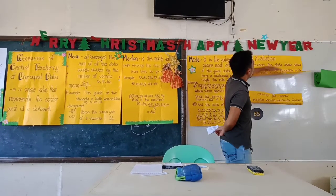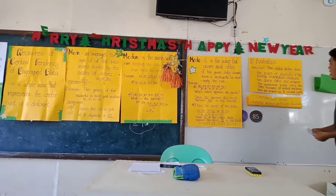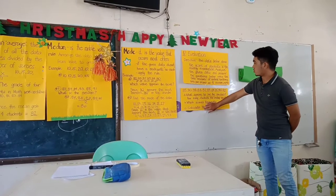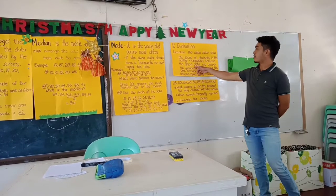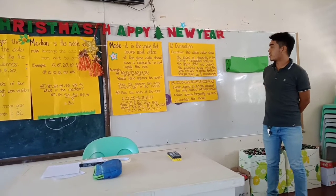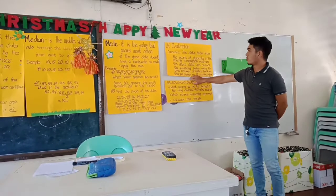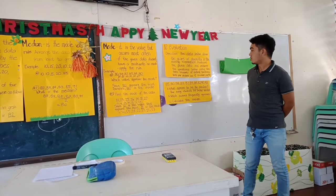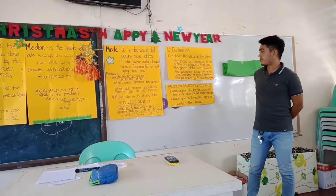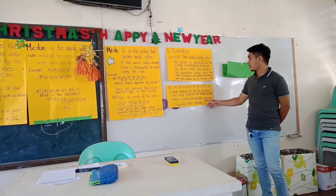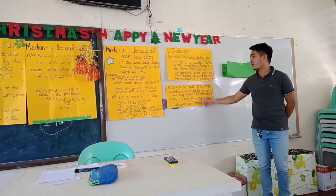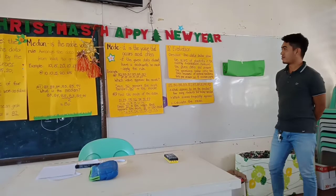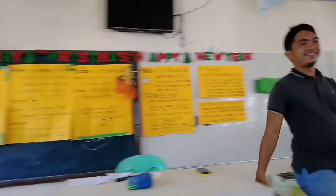Okay, so let's have an activity. Get one piece of paper folded twice. The direction: the data below shows the scores of students on the monthly examination. Analyze the given data and answer the questions below using the three measures of central tendency — mean, median, and mode. You have to calculate these tasks. Number one: What appears to be the most median? What is the median? How many students fall below the median? Number two: Which score frequently appears — what is the mode? Number three: Find the mean scores of the students. You have ten minutes to answer.